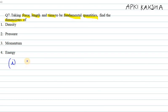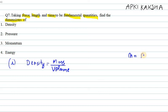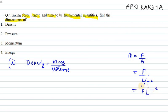Mass can be written as force over acceleration. We know force is F and acceleration is L over T squared, so therefore we get F times L raised to power minus 1 times T squared. This is the expression for mass in terms of the fundamental quantities.